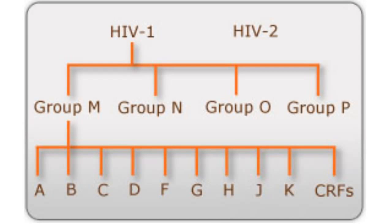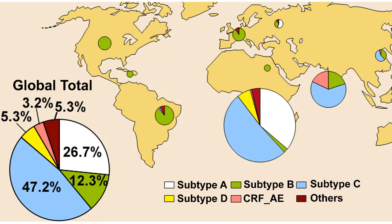Among Group M, we subdivide further into subtypes. If you are in Southern Africa, China, or India, the dominant subtype is designated subtype C. In North America, almost all cases are going to be subtype B. Subtype J is emerging as dominant in the Caribbean, and D in Russia. Each of these different subtypes varies ever so slightly from other subtypes.